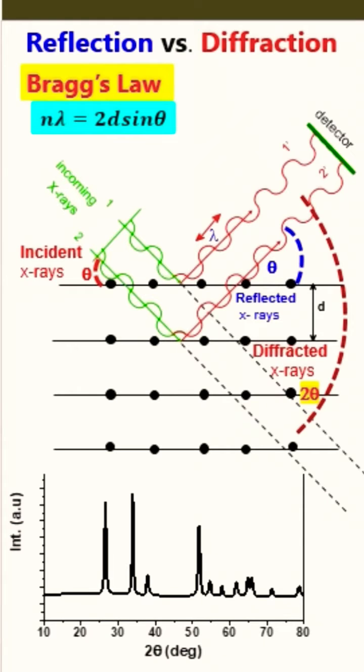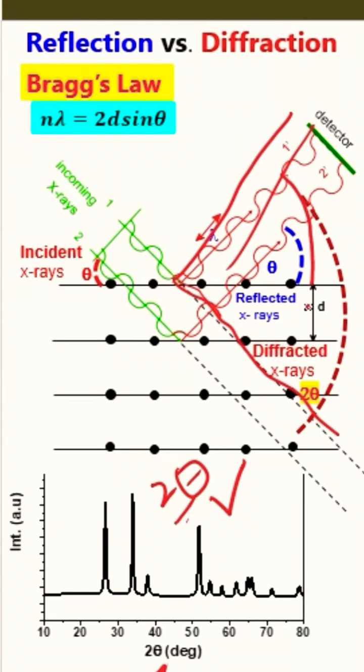In XRD spectrum, this 2 theta is very confusing. Sometimes people call this reflected angle, sometimes people call it scattering angle, while other people call it deflected angle. This is basically the deflected angle, which is the angle between the incident or transmitted X-ray and the reflected X-ray.